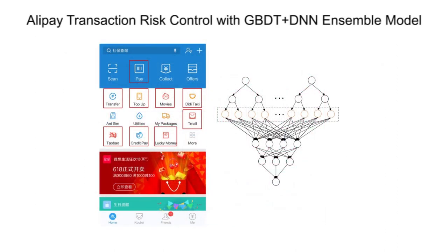In Alipay, a large-scale GBDT plus DNA ensemble model was trained by Kun Peng to improve the capability for early detection of fraud transactions and provide users a highly secure environment.